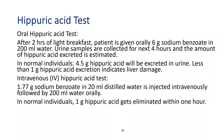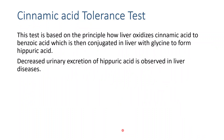Interpretation for the IV test: in normal individuals, 1 gram of hippuric acid — equivalent to 0.8 grams of sodium benzoate — will be excreted in 1 hour. A decrease in the urinary excretion of hippuric acid indicates liver damage.